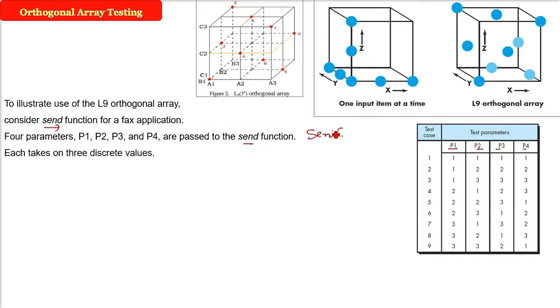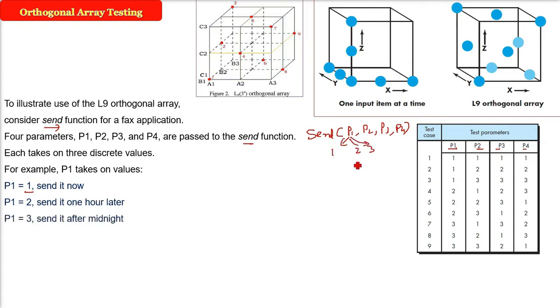Each of these—that is, p1—can take certain values, three values. p1 can be 1, corresponding to send it now; p1 can be 2, send the fax one hour later; or p1 can be 3, send it after midnight.